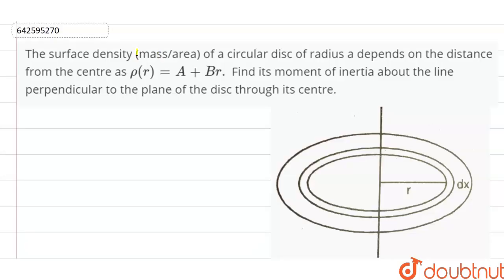The surface density, which is mass upon area, of a circular disc of radius a depends on the distance from the center as ρ(r) = A + Br. Find its moment of inertia about the line perpendicular to the plane of the disc through its center.